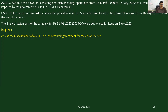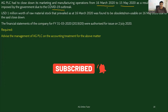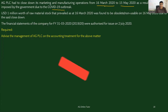Now let's move on to this particular question. AG PLC had to close down its marketing and manufacturing operations from 16th March 2020 to 15th May 2020 as a result of the curfew imposed by the government due to the COVID-19 outbreak. US dollar 1 million worth of raw material stock that prevailed as at 16th March 2020 was found to be obsolete and non-usable on 16th May 2020 due to the said close down.